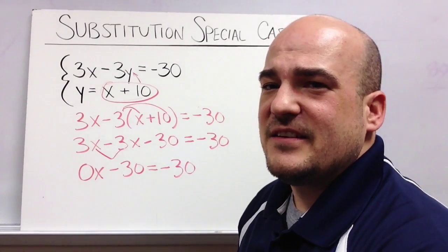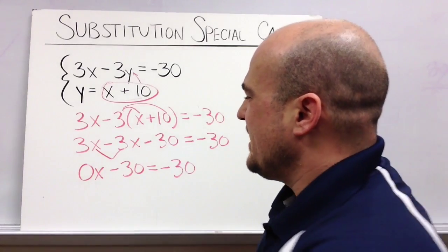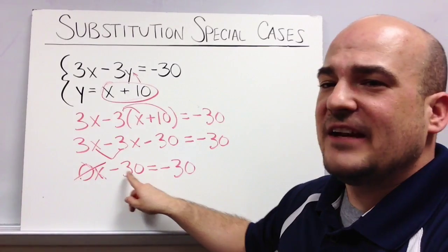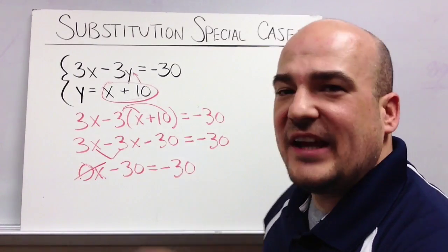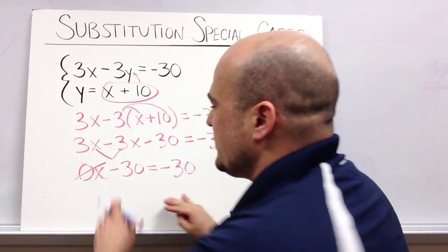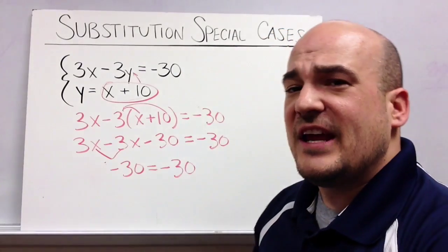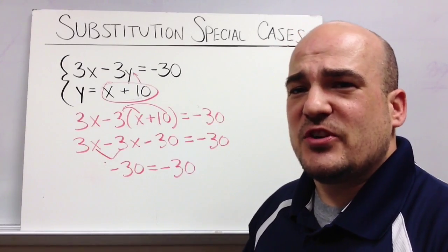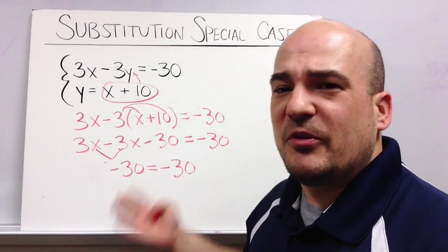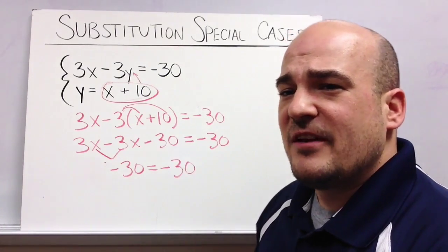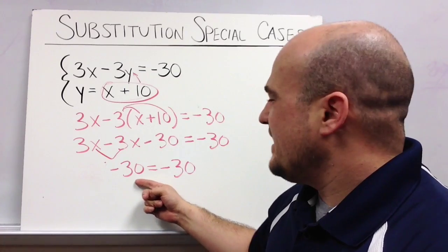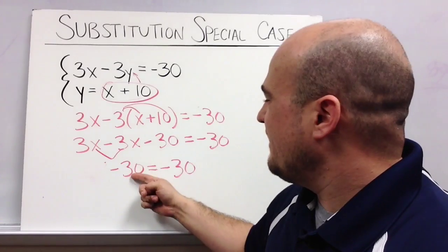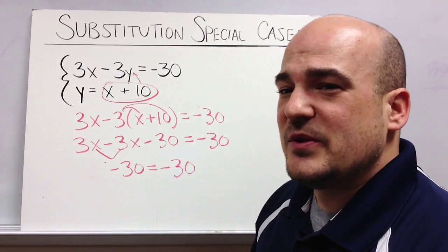0 times x is just 0. So really what I'm saying here is negative 30 equals negative 30, because 0 times x just cancels out, that kind of just goes away, and I'm left with negative 30 equals negative 30. So it doesn't seem like substitution quite works here because where did all your variables go? But really you can look at this and decide is this true or is this a false statement? And in this case it is true, negative 30 does equal negative 30. Those two things are equal to each other.